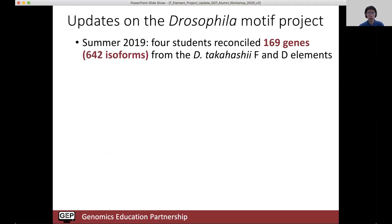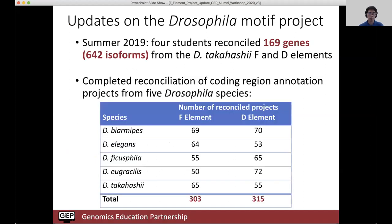Just a brief update on the motif project. Last summer, four students at WashU reconciled 169 genes and 642 isoforms from takahashii F and D elements. In ERGIG, we have a total of 303 projects from the F element and 315 projects from the D element, where we have reconciled gene models for five different Drosophila species. All of that is completed and we have a dataset that's ready to go.